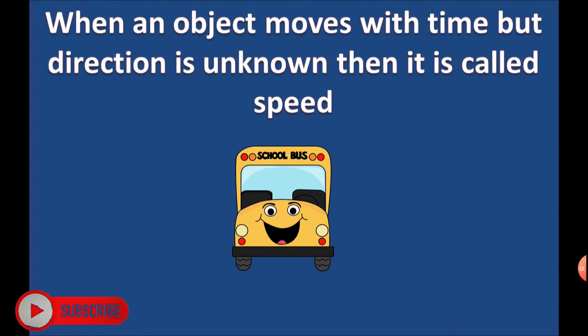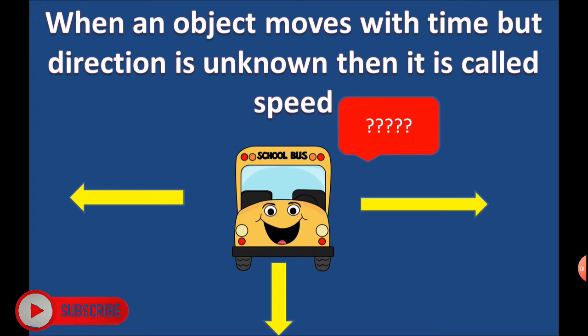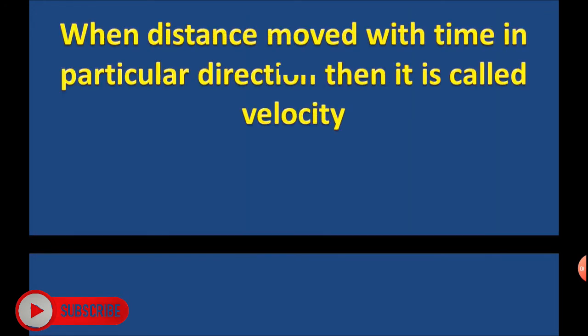When an object moves with time but direction is unknown, then it is called speed. Here, in which direction the object moves is undefined. Speed was already discussed in our previous presentation.